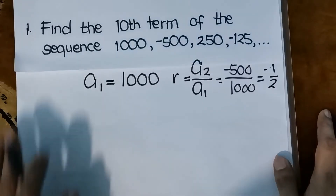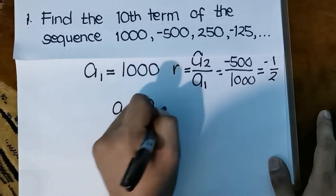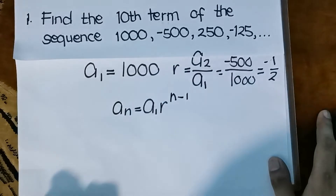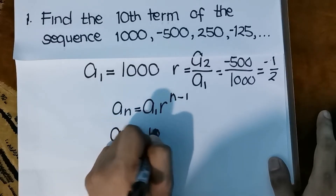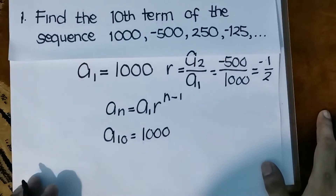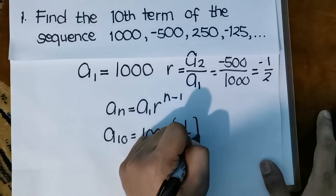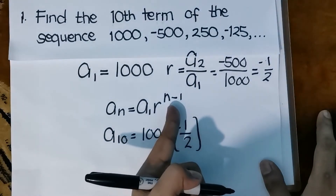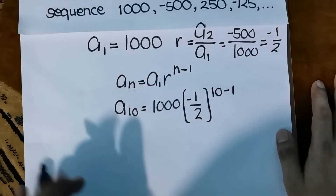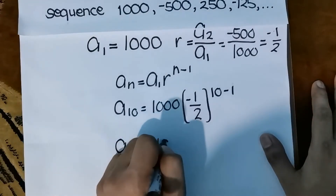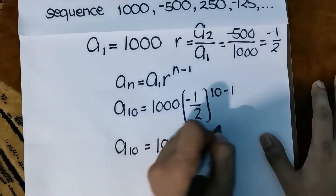Now that we have the first term and the common ratio, we use the formula: a sub n equals the first term times the common ratio raised to n minus 1. We're finding a sub 10, so: a sub 10 equals 1,000 times negative 1 half raised to the power of 10 minus 1, which is 9.